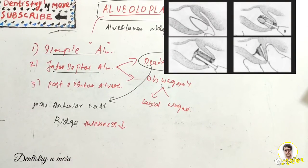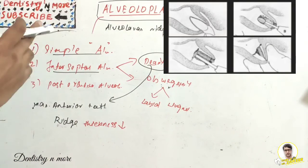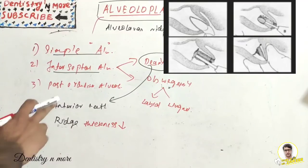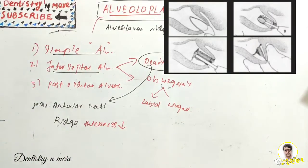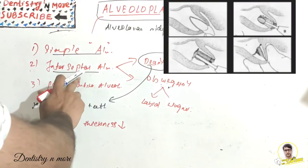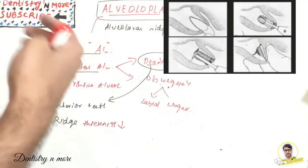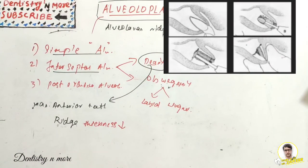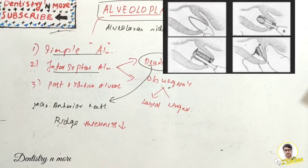So that was all about alveoloplasty. To summarize: alveoloplasty is essentially ridge contouring, while alveolectomy is bone cutting or bone removal. Alveoloplasty has three techniques: simple alveoloplasty, interceptal alveoloplasty, and post-extraction alveoloplasty. Post-extraction alveoloplasty is the same procedure of contouring the margins of the alveolar socket after extraction. Under interceptal, we have Dean's and Obwegeser's types — in Dean's, only the buccal cortex is compressed, while in Obwegeser's both labial and lingual cortices are repositioned. I'll come up with a new topic in oral and maxillofacial surgery. Thank you.